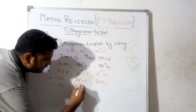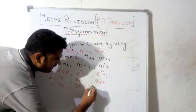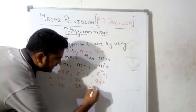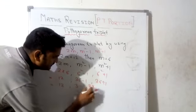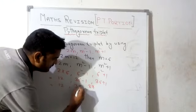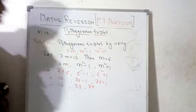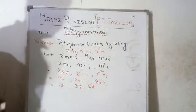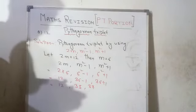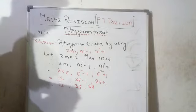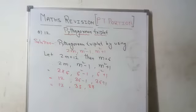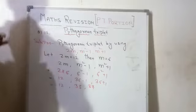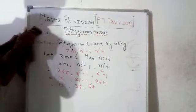So 12, 35, and 37 — these are the required Pythagorean triplet. Next question.